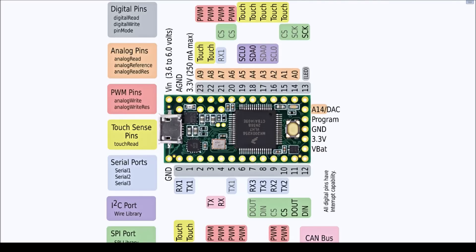Analog to digital works by reading a voltage on a single analog to digital pin on your microcontroller. That voltage is programmatically turned into an integer. Once you get that integer you can use it to do any sort of logic that you need to reason about the voltage that you're reading.